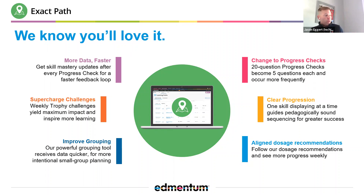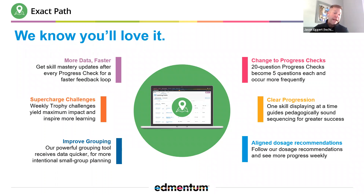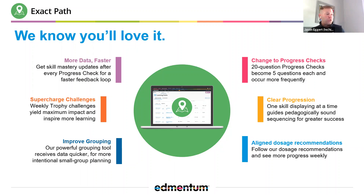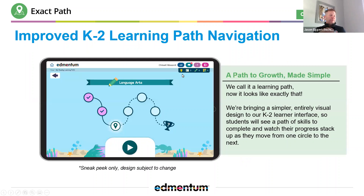Teachers are going to get data more quickly, which will allow them to group their students based on progress within their learning path. You can supercharge those badge challenges — whether you have grade-level challenges, a friendly competition with a neighboring classroom, or the building principal is running a trophy challenge with ExactPath. You're really going to be able to supercharge those, with one skill at a time within each student's learning path.